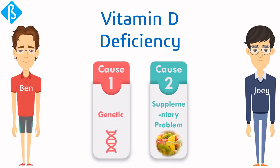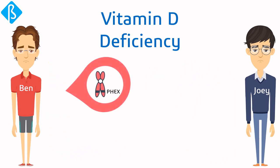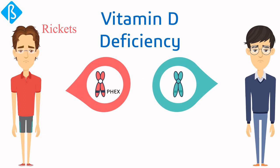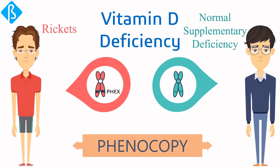If we get a closer look at Ben, he has a fax gene — a mutated gene that causes the genetic disorder rickets. So Ben is having vitamin D deficiency due to a genetic problem. But in the case of Joey, he has no mutated genes; he has normal genes and a normal supplementary deficiency. As you can see, the genotype is not similar here, yet Joey is a phenocopy of Ben.